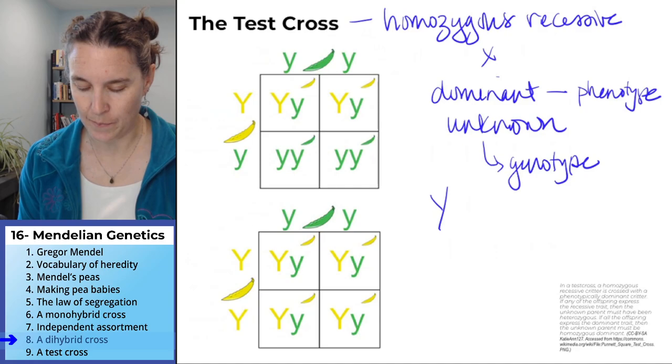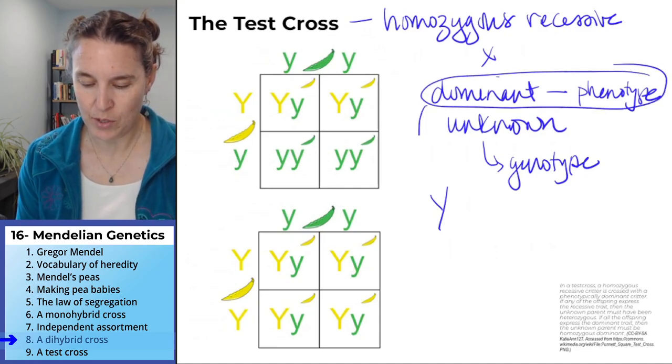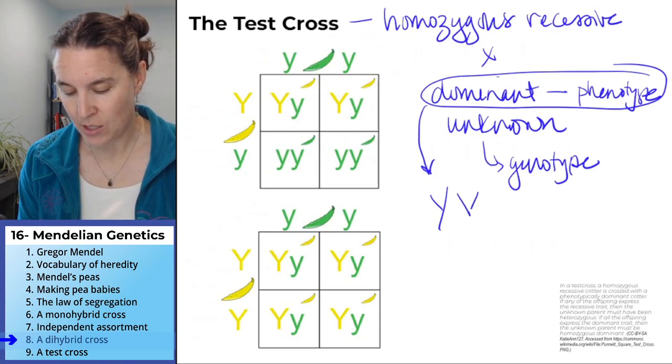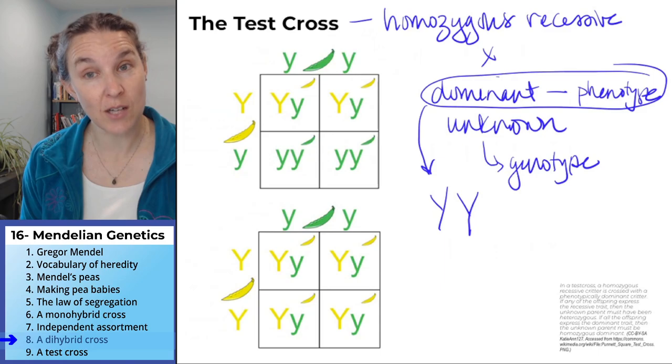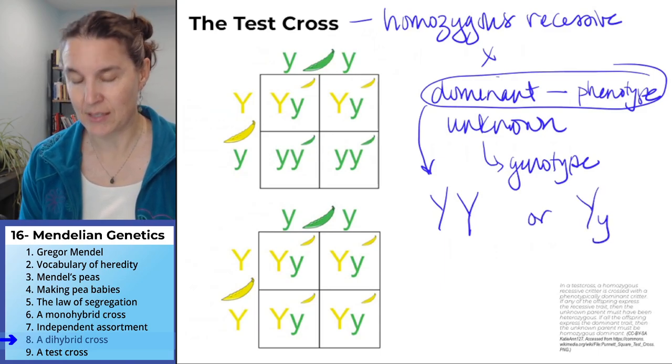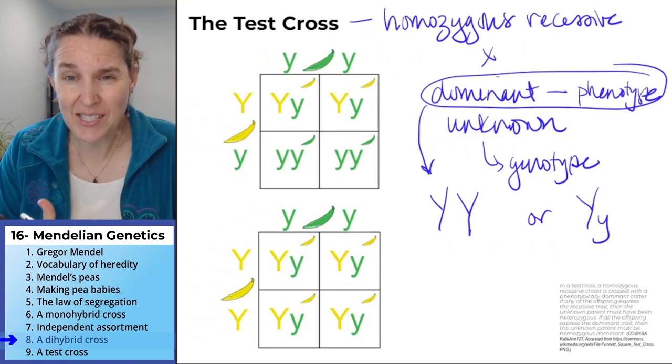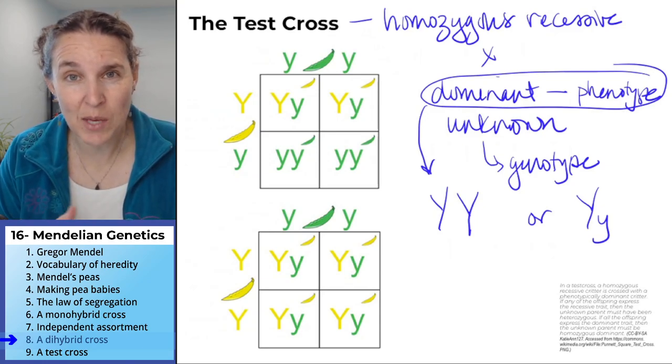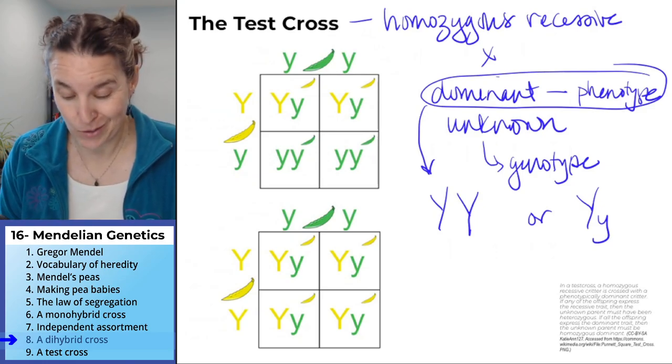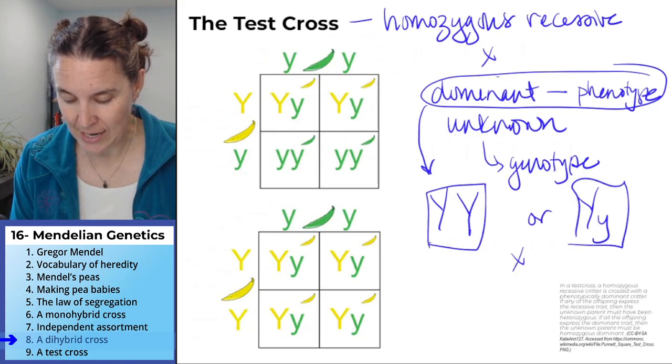A dominant phenotyped person or pea could have a homozygous dominant genotype or a heterozygous genotype. And if the critter is expressing the dominant phenotype, you may not know what their genotype is, but you do know that it could be either one. If you run a test cross...